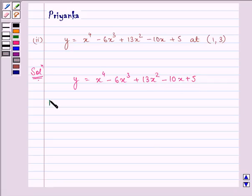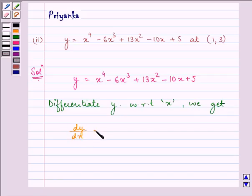Now let us differentiate y with respect to x. On doing so we get dy/dx is equal to 4x cube minus 18x square plus 26x minus 10.